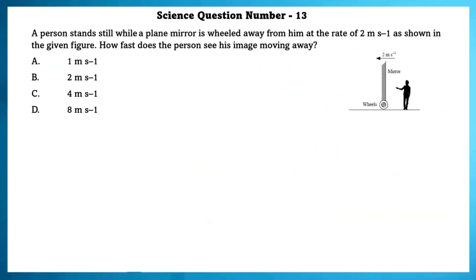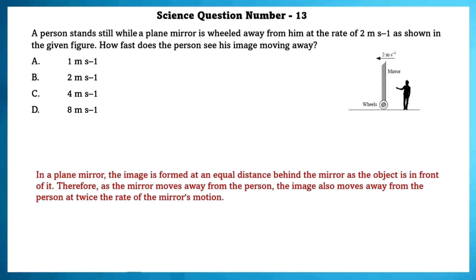Science question number 13. A person stands still while a plane mirror is wheeled away from him at the rate of 2 meter per second as shown in the given figure. How fast does the person see his image moving away? In a plane mirror, the image is formed at an equal distance behind the mirror as the object in front of it. Therefore, as the mirror moves away from the person, the image also moves away from the person at the twice rate of the mirror's motion. So, the answer is the C option.